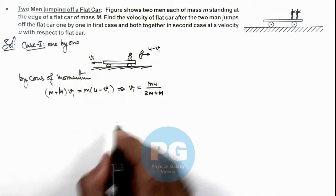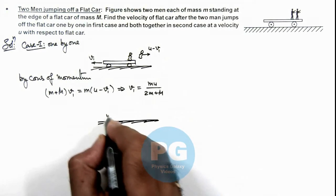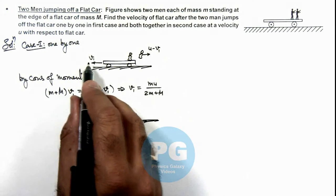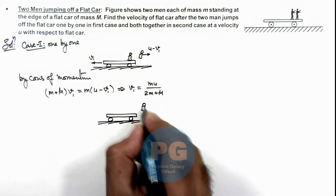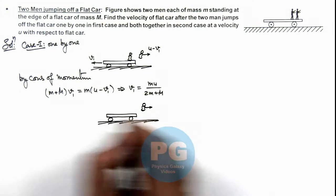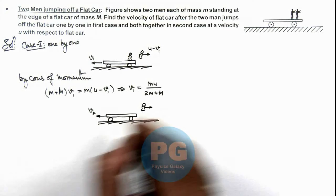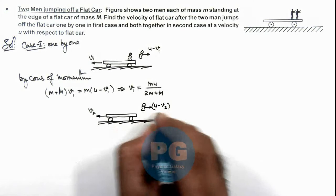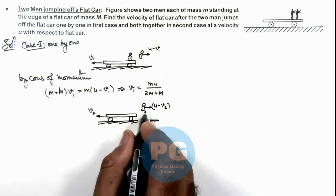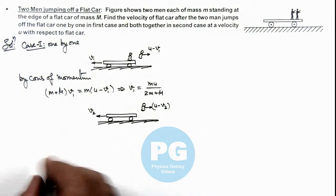And now if another man also jumps off, you can see the car was initially moving with the velocity v1. And now if the second man also jumps off, then the car velocity increases to v2 due to the impulse imparted by this man. And its velocity will be u minus v2, as u is with respect to the car. And before jumping off the man, the initial momentum is (M + m)v1.